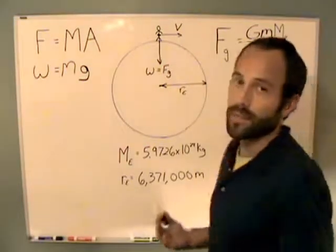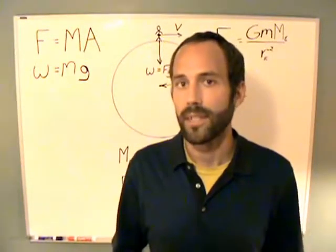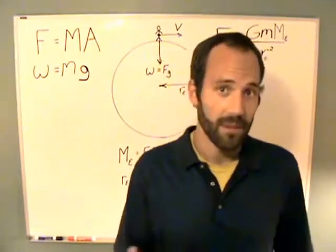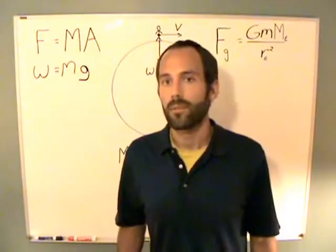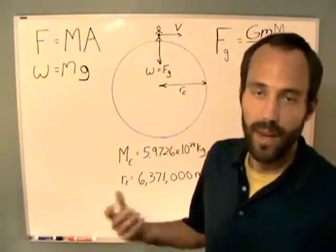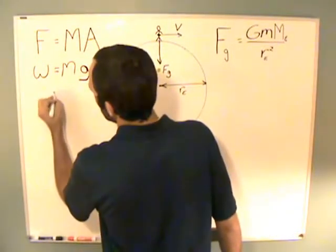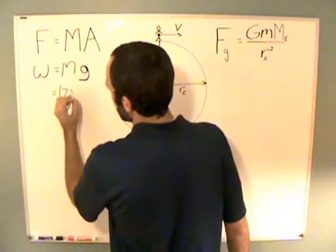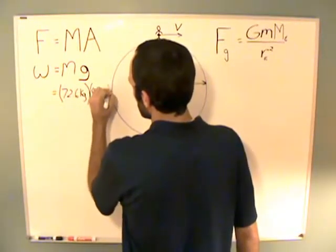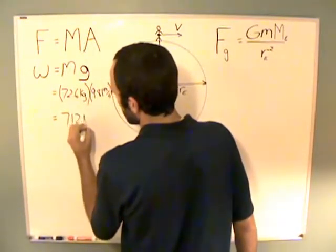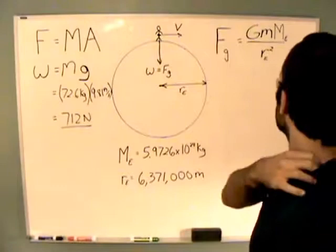I weigh about 160 pounds. In the English system, there is a unit called the slug that's used for mass, but nobody uses it. If I say my weight is 160 pounds force, I can convert that to mass in the metric system, which is about 72.6 kilograms. So, my weight in the metric system would be 72.6 kilograms times 9.81 meters per second squared, which equals roughly 712 newtons. That's my weight in metric units.